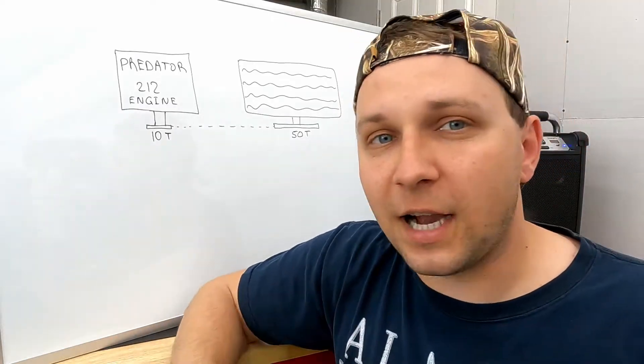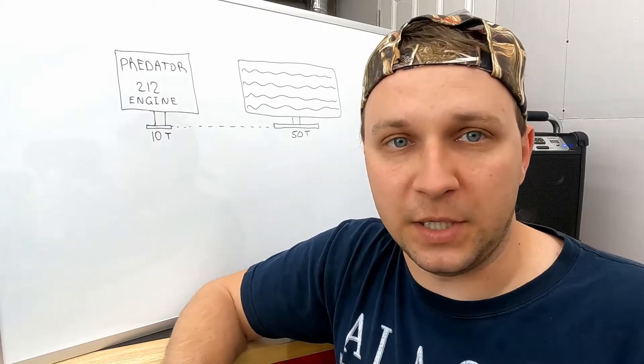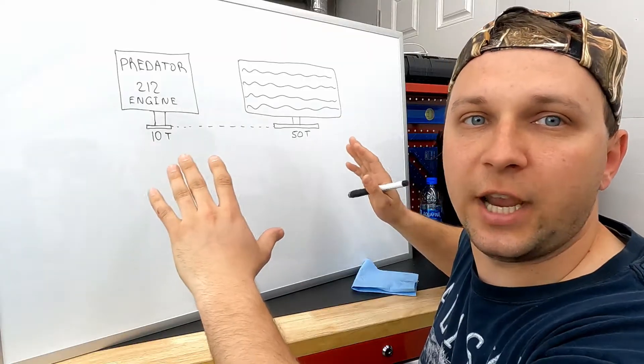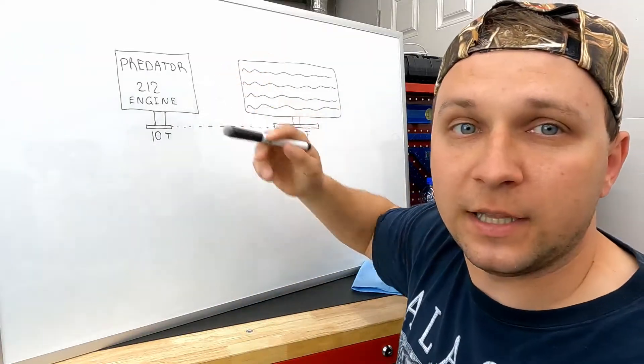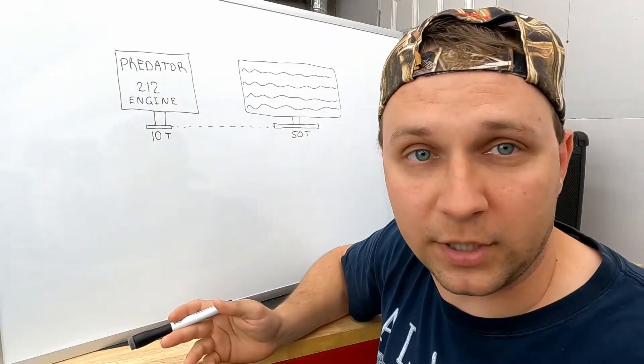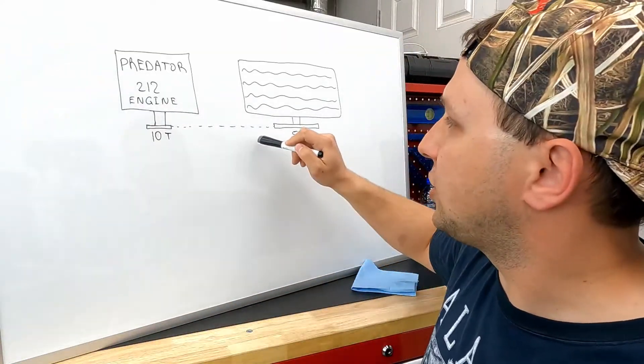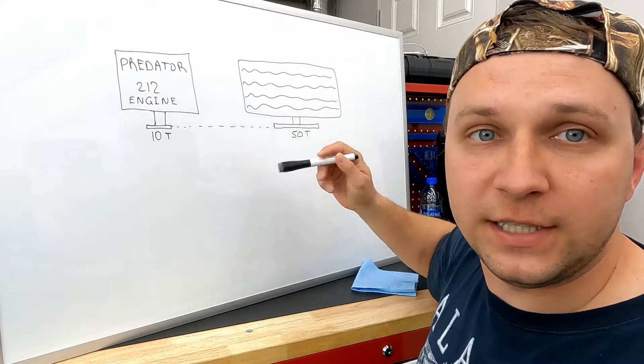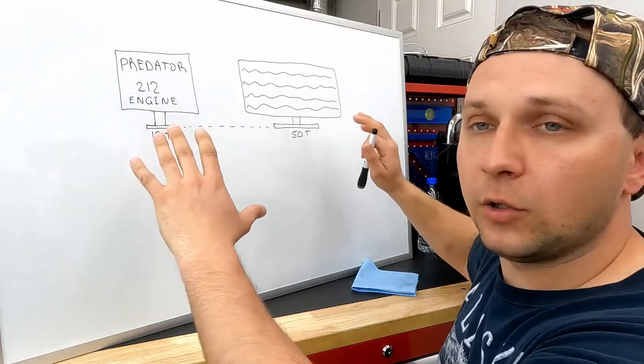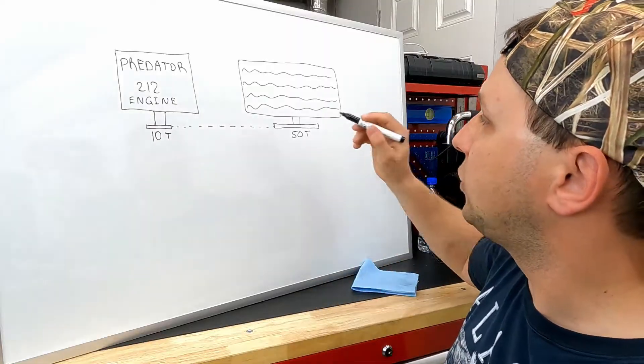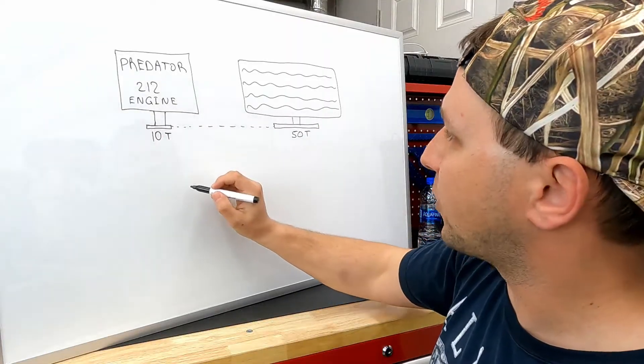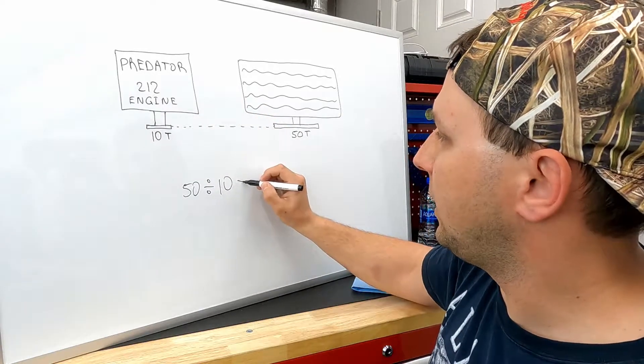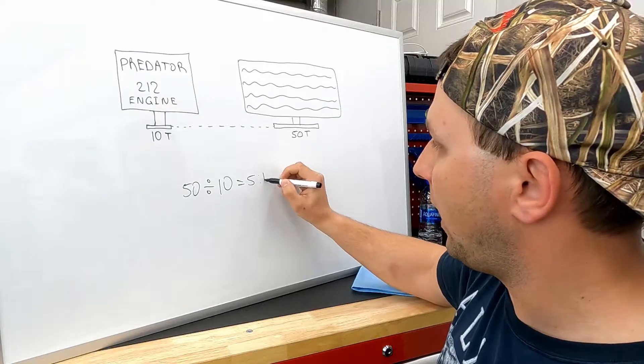We're gonna talk about gear ratios first and then top speed. Our first setup is just a basic one-stage chain drive system. Here's our engine, let's say it's a Predator 212 engine, a really popular engine with a 10 tooth sprocket, our chain, and our driven sprocket, a 50 tooth sprocket. In order to calculate the gear ratio of this setup, we have to divide our driven sprocket by our drive sprocket: 50 divided by 10 equals 5 to 1 ratio.